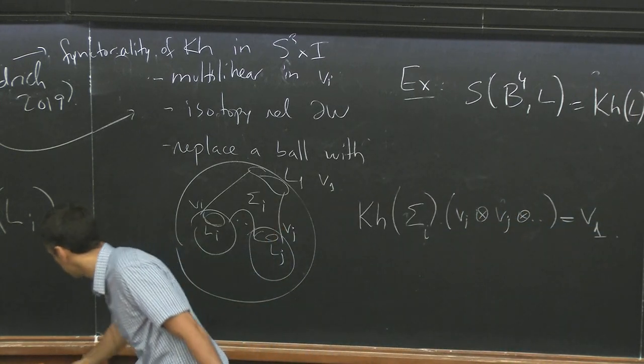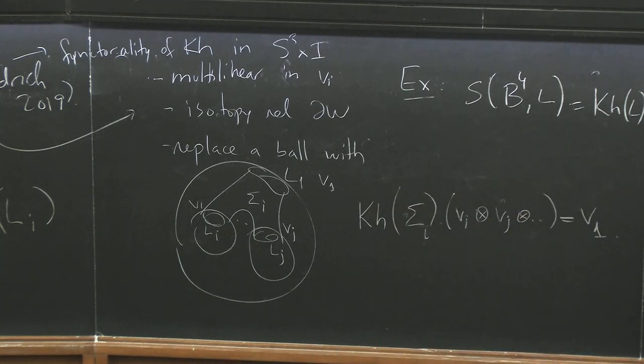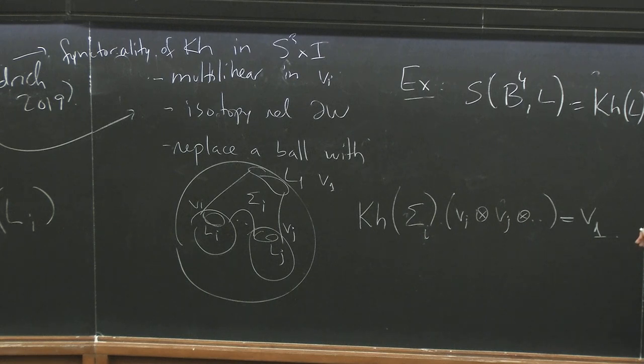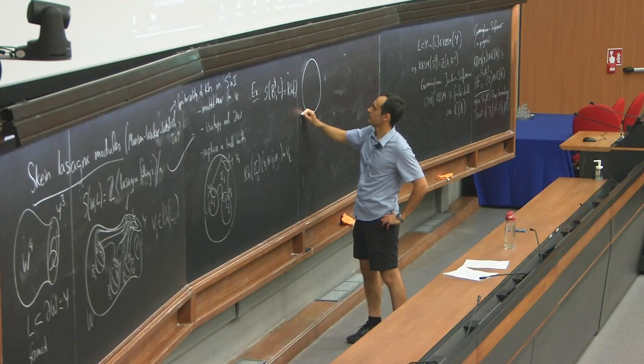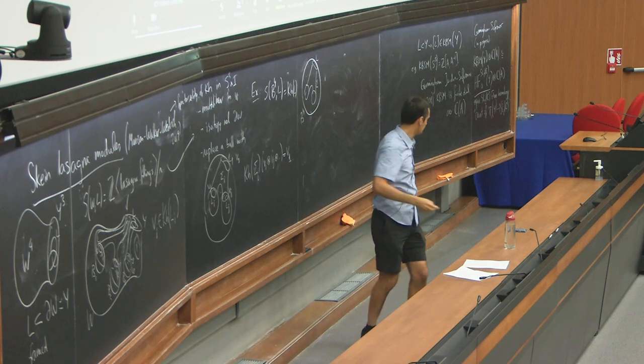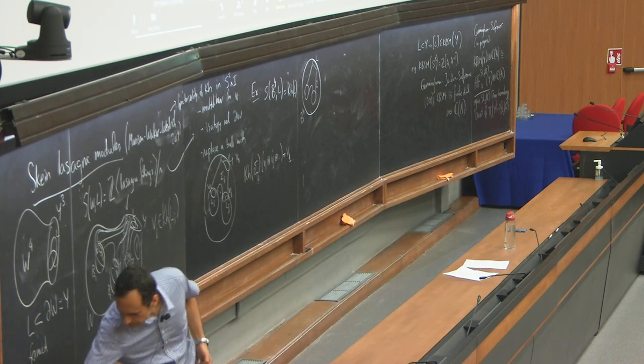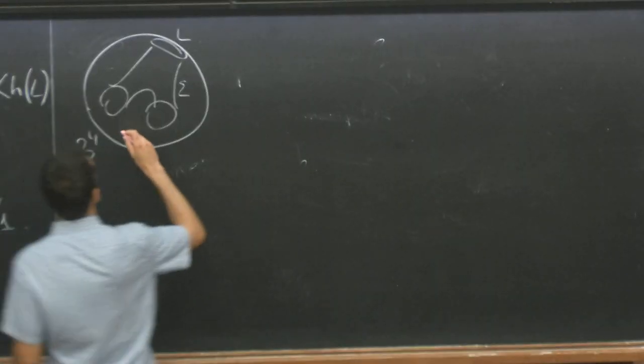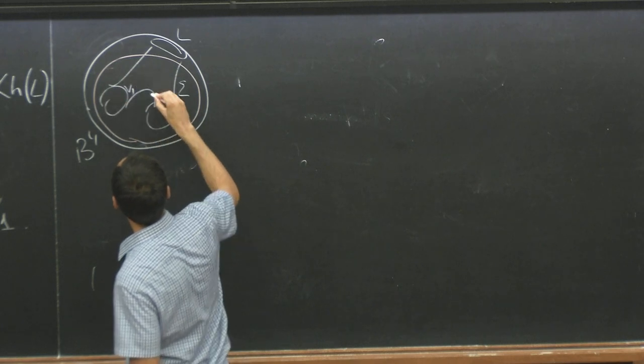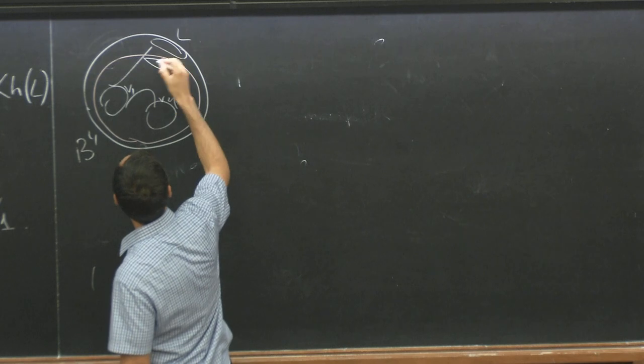So Morrison, Walker, and Wedrich, when they defined this, they had to prove like functoriality of Khovanov in S3 times I rather than R3 times I. And this required checking one extra move from the usual functoriality of Khovanov homology. Okay. So the most important example is that S of B4 and L is just Khovanov homology. So this is an extension of the usual theory.